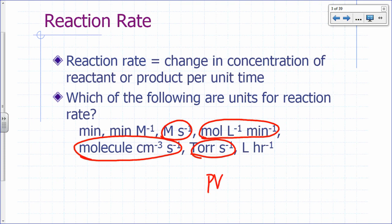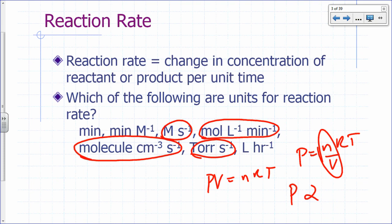Why is that? If you use the ideal gas law, PV = nRT, then P = nRT/V, and n/V is concentration. So pressure is directly proportional to concentration. At a given temperature — and usually when you do rate studies, you maintain the temperature — you do measurements at constant temperature. So those would be units for reaction rate.